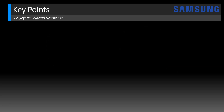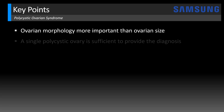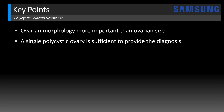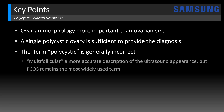The key points for this case: ovarian morphology has been shown to be more important than ovarian size. Also, just having a single polycystic ovary is sufficient to provide the diagnosis — so if you have a single ovary that's greater than 10 cc's in size. Now I should note that the term 'polycystic' is generally considered incorrect; cysts are usually pathologic and these are follicles we're talking about. So 'multifollicular' has been proposed as a more accurate description of the ultrasound appearance, but PCOS still remains the most widely used term.